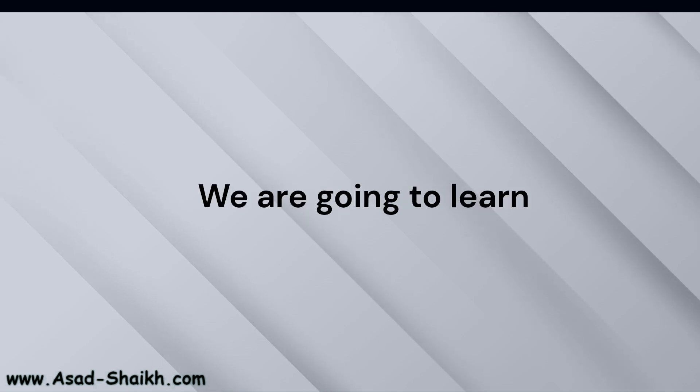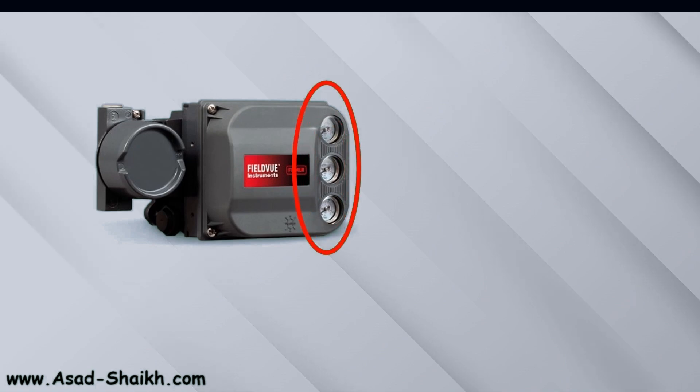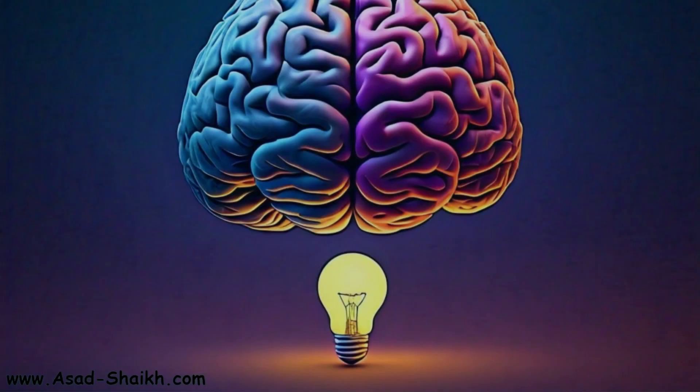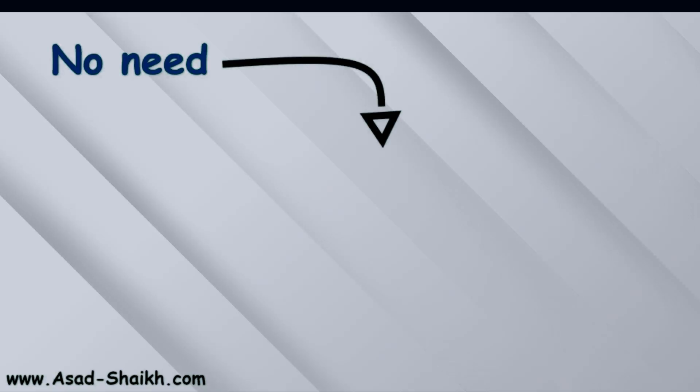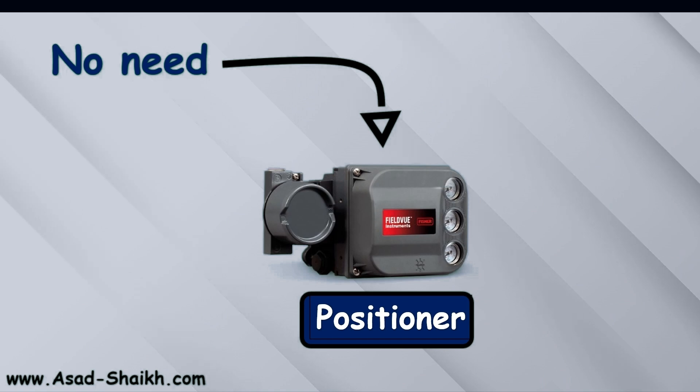In this video we are going to learn about control valve positioners. If you look at a positioner, you will notice these three pressure gauges. What do you think is the reason to have these three pressure gauges? What if I tell you that ideally there is no need of a positioner in the first place?